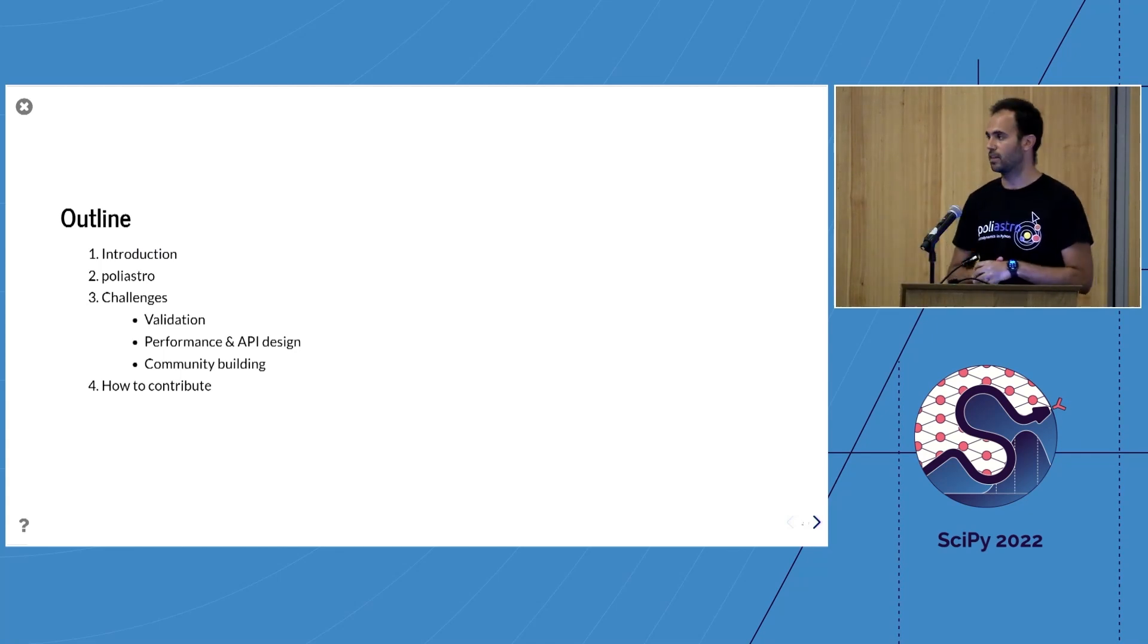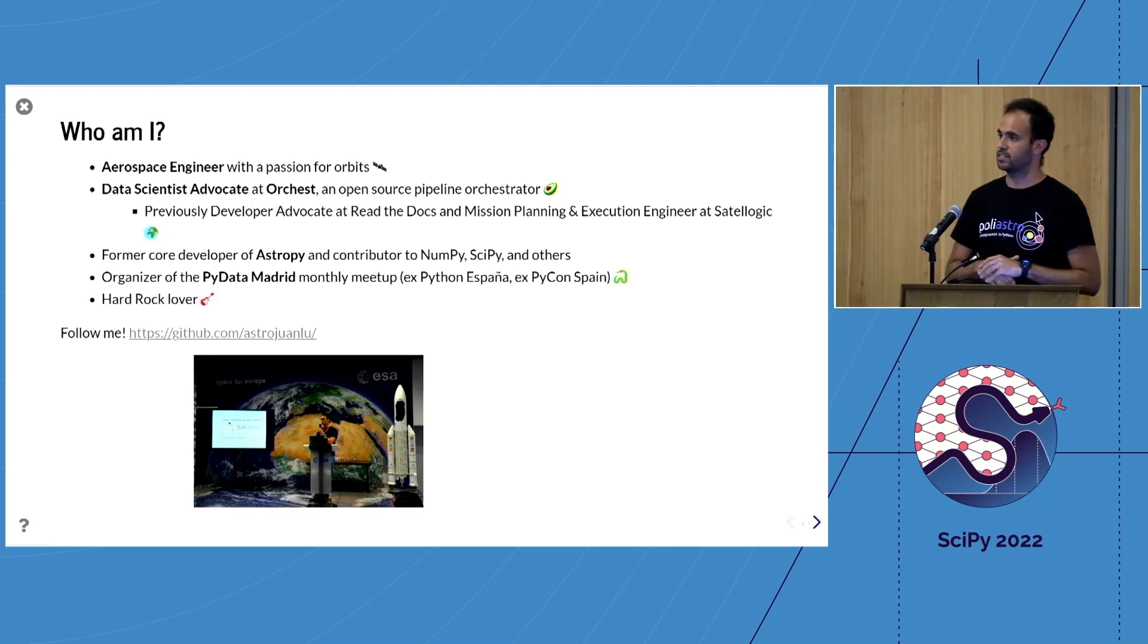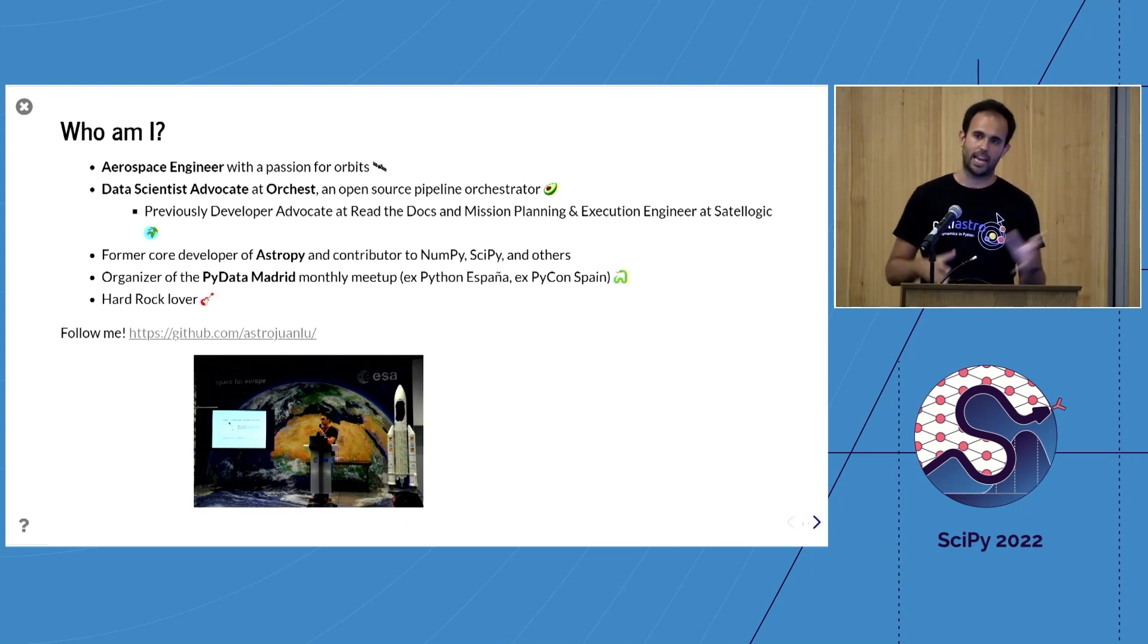A few words about me: my name is Juan Luis Cano. I'm originally an aerospace engineer from the Technical University of Madrid. At the moment, I'm working as a data scientist advocate at Prefect, which is a company creating an open source pipeline orchestrator. Before that, I was working for one year at Read the Docs, and before that I had a past in the space industry.